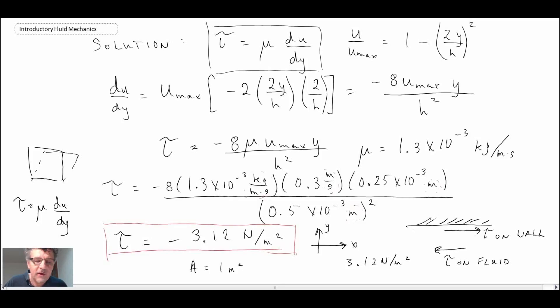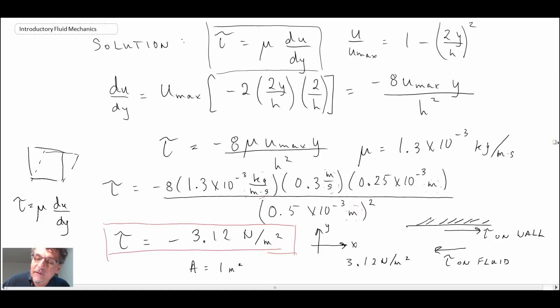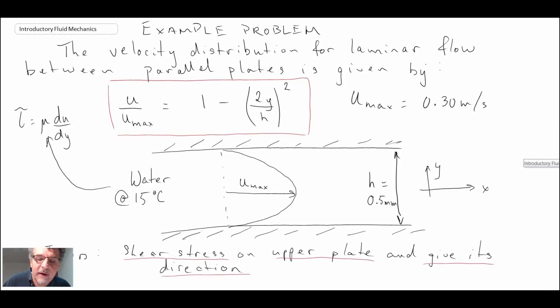That concludes the example of determining the shear stress on the upper wall and what we find that it is in this direction. It is 3.12 newtons, assuming area equals one meter squared.